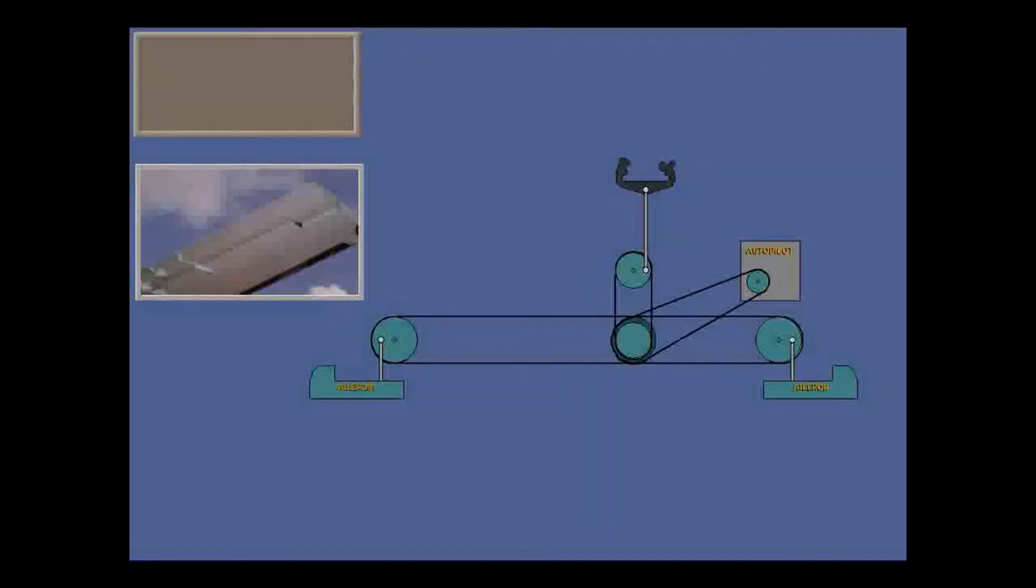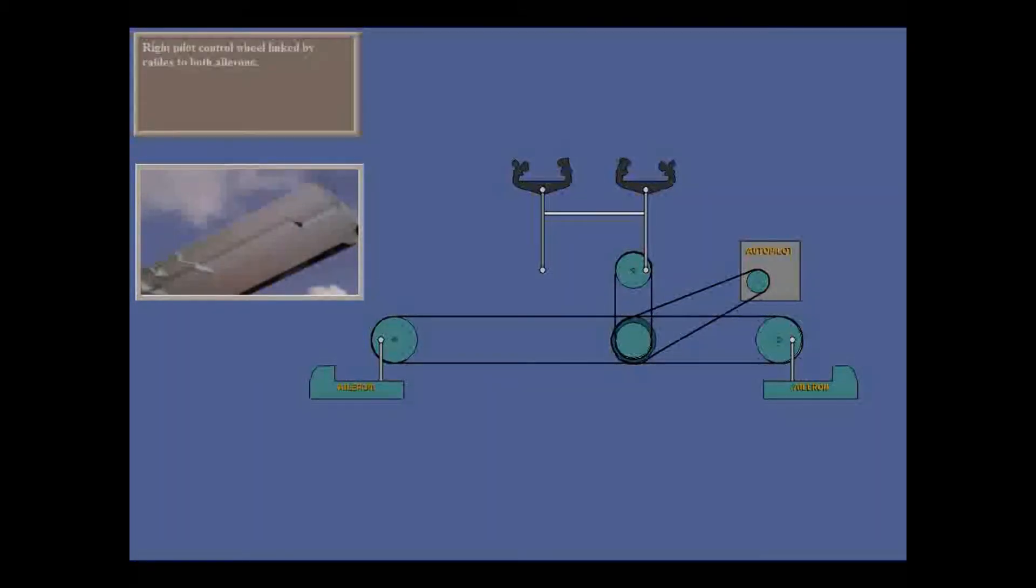The right pilot control wheel is directly linked by cables to both ailerons, but the control wheels are normally interconnected, so rotating either wheel mechanically moves the ailerons. Movement is helped by geared tabs.